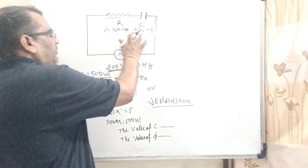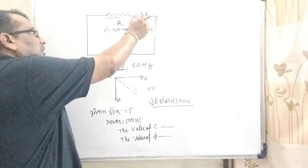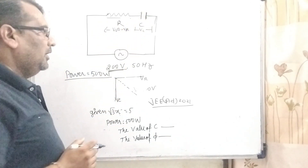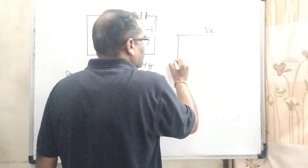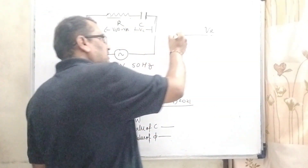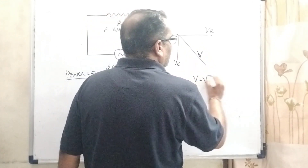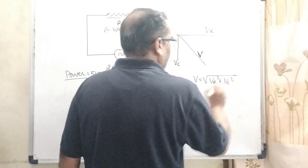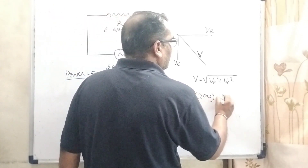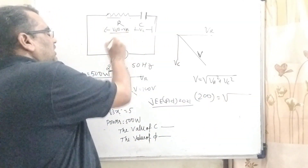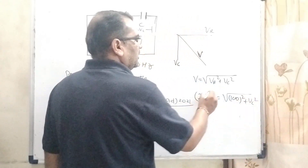Now here, first of all, we have given that the input potential is 200 volt, and the potential across the resistance is 100 volt, and the potential across the capacitor is V_C. As we know that the ohmic potential V_R is always in phase, and the resultant potential V equals √(V_R² + V_C²). The RMS value is given as 200 volt, and V_R is 100 volt.